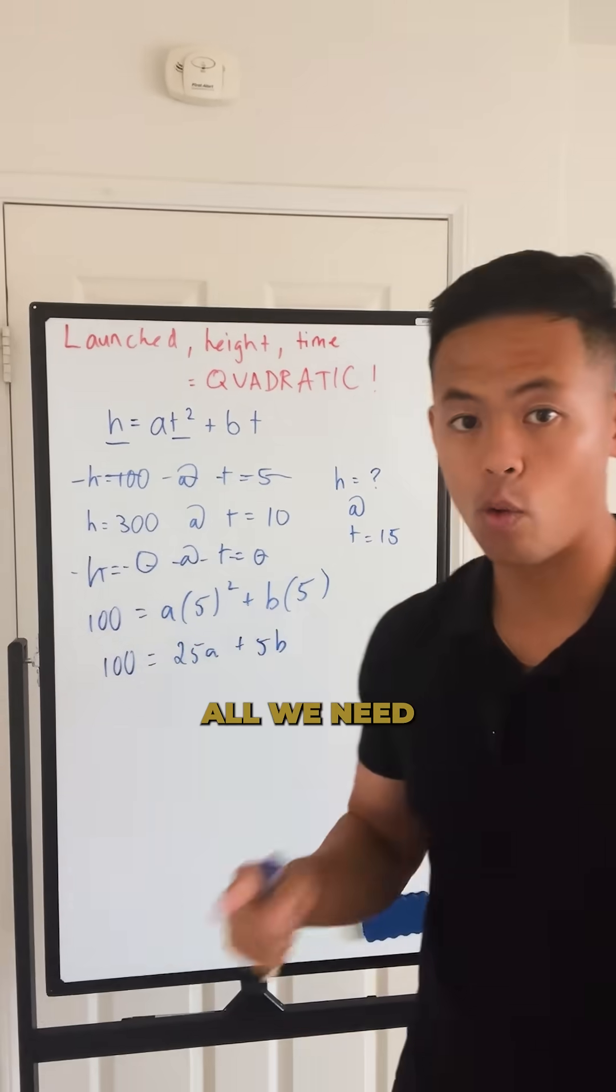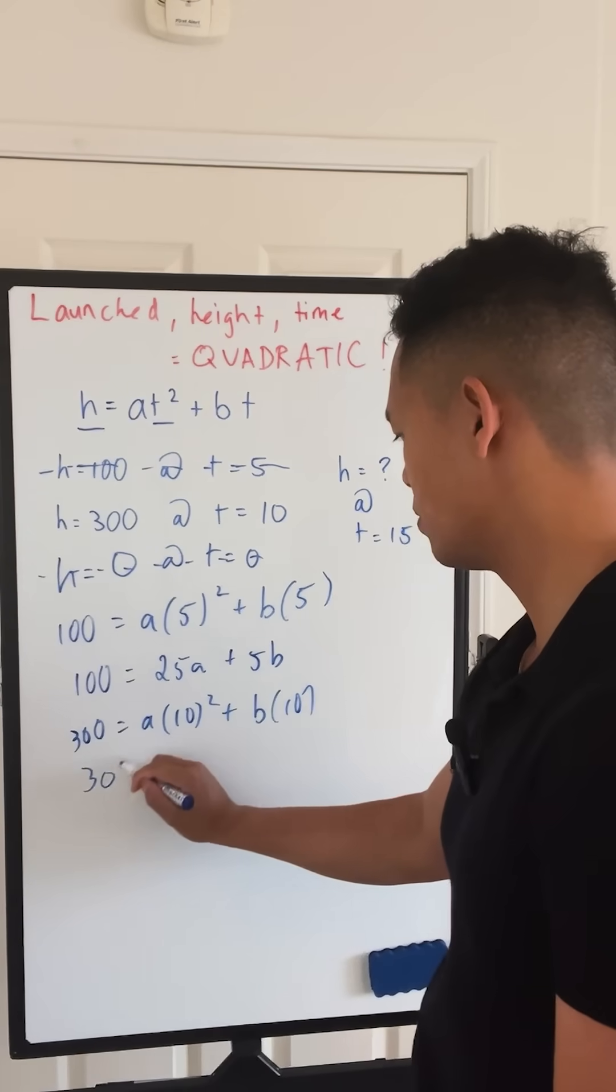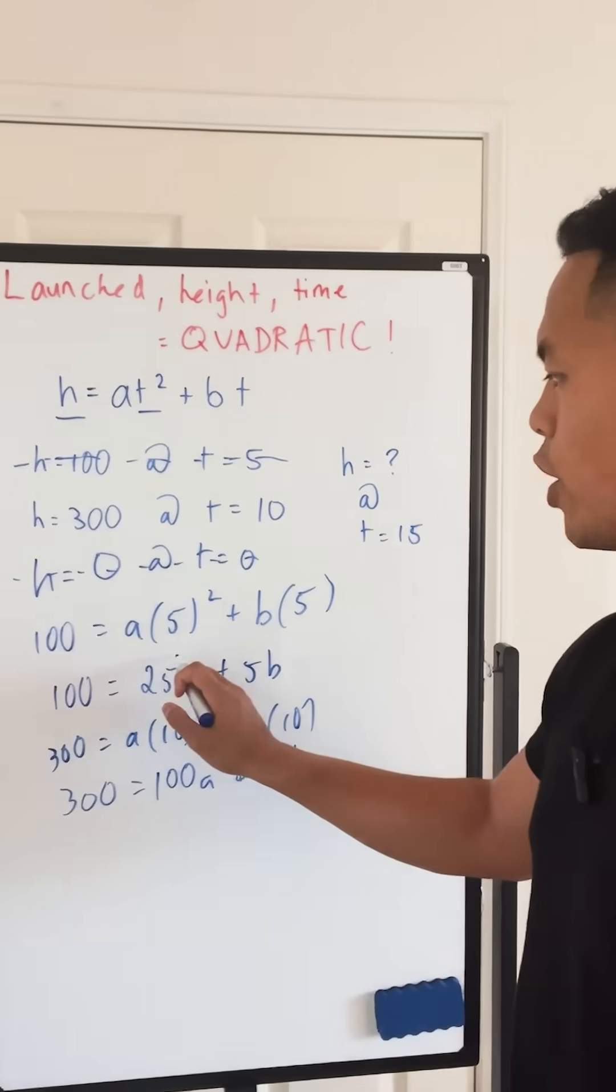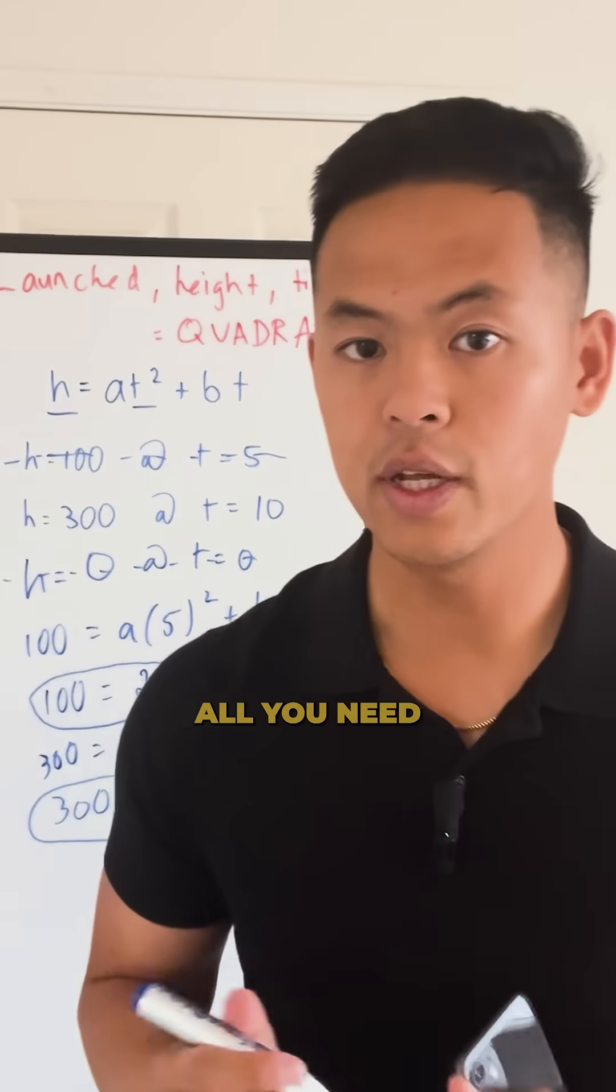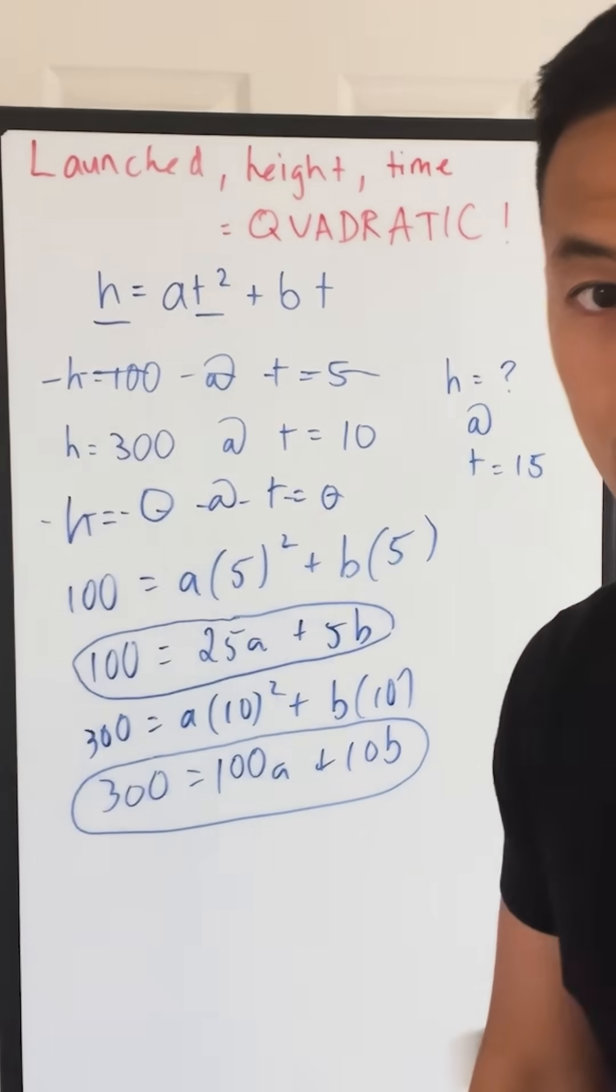Now for the next equation, we plug in the second point, giving us 300 equals A times 10 squared plus B times 10. Notice we have two equations for two unknowns. All you need to do to solve for A and B is use either substitution or elimination.